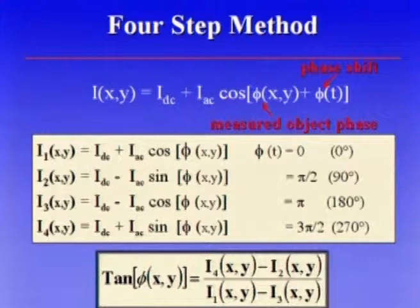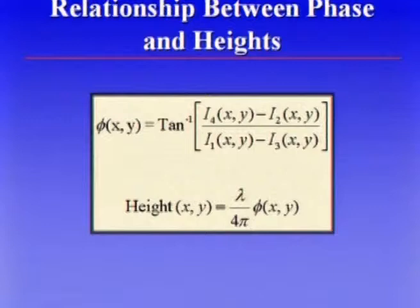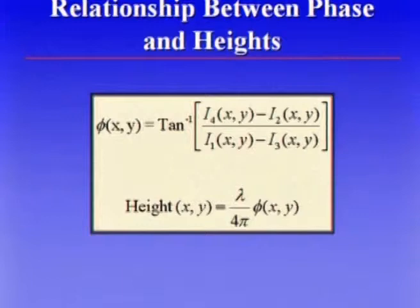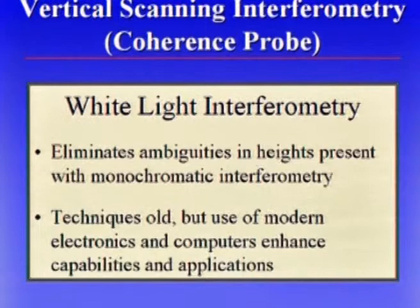So the phase calculated is the arc tangent of that ratio. Looking at normal incidence, I take whatever I calculate, divide by 4π, multiply by the wavelength, and get the height variations across the sample. It's a very powerful, simple equation that has become more powerful as computers, detector arrays, and electronics have improved. The limitation of this technique is you can't measure very large steps or very rough surfaces. That takes us to our second mode of measurement: the vertical scanning or coherence probe technique. These techniques are not new, but with modern electronics and computers they have become very powerful.